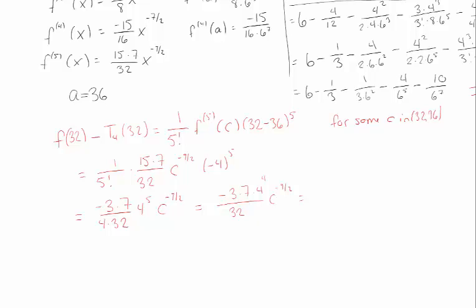And 4 squared divided by 2 is 16 divided by 2, which is 8. So this looks like a much more reasonable way to write my error. So I know that my error for some c is equal to this negative constant times c to the minus 9 halves, and c is between 32 and 36.